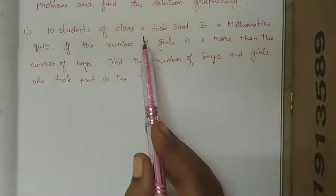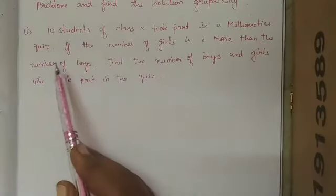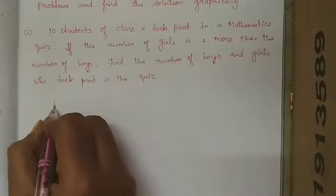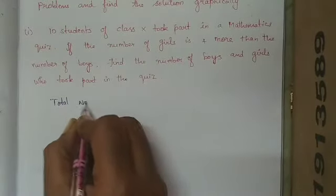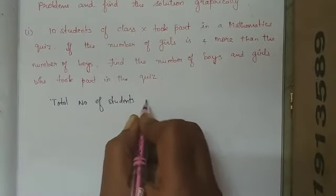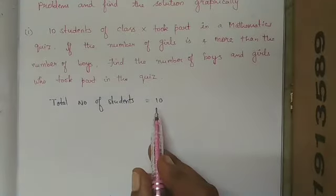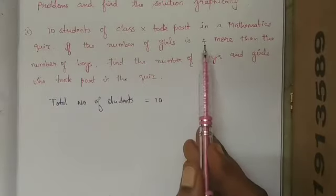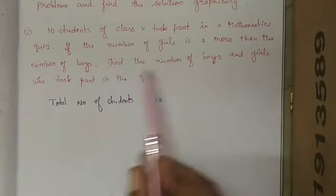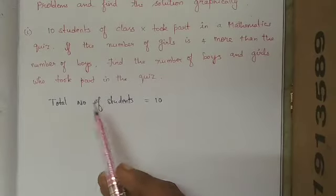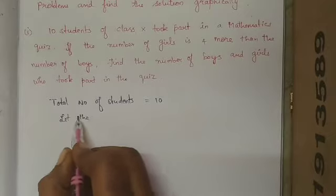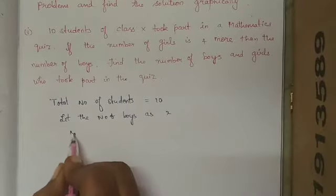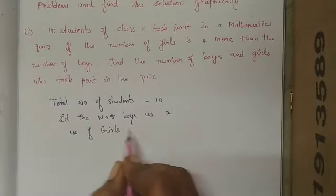The first question: 10 students of class 10 took part in a mathematics quiz. If the number of girls is 4 more than the number of boys — so total 10 students are there, and both boys and girls have participated. Let us take the number of boys as x and the number of girls as y.